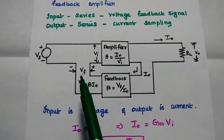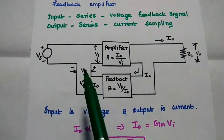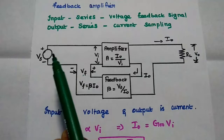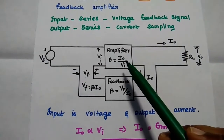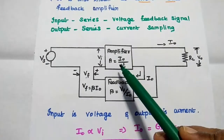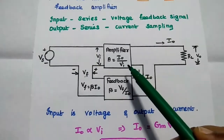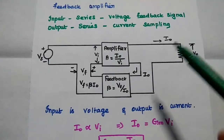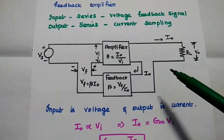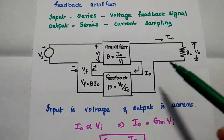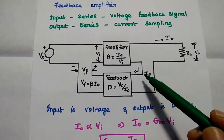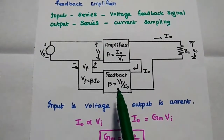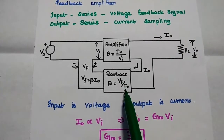The voltage feedback is connected in series with the input signal. The amplifier has a gain A equal to output by input. Output is nothing but the current, and input is the voltage for this amplifier. Next, we are going to use current sampling method, which can be done by using series sampling. The feedback network has a gain beta equal to output by input.